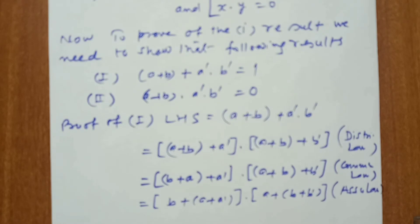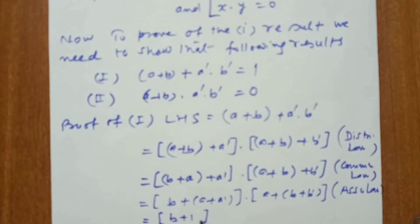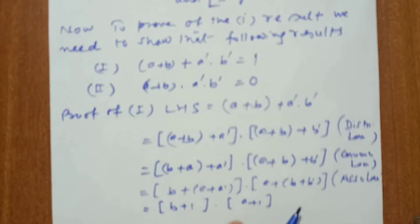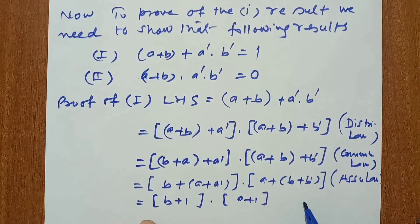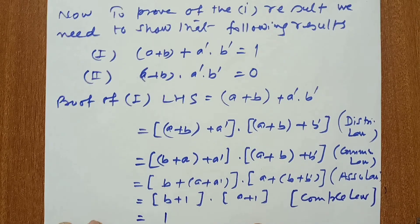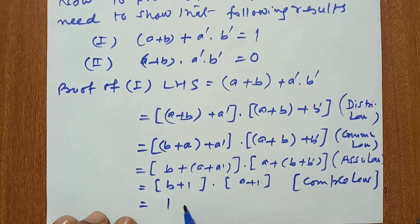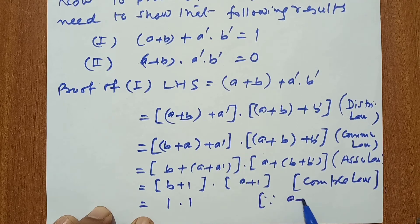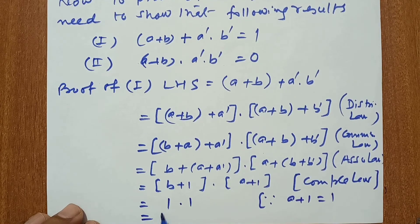Now, a + a' = 1 by complementary law, so we have (b + 1) · (a + 1). Since a + 1 = 1 and b + 1 = 1, this equals 1 · 1 = 1. So the first condition is established.